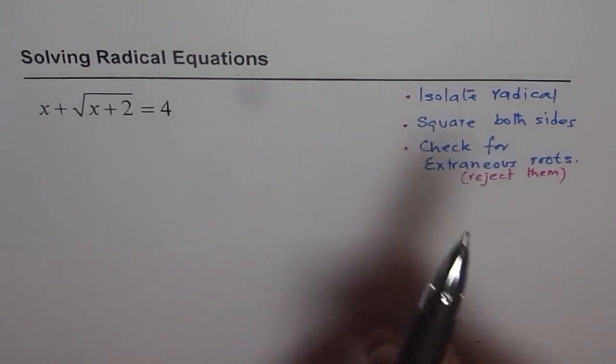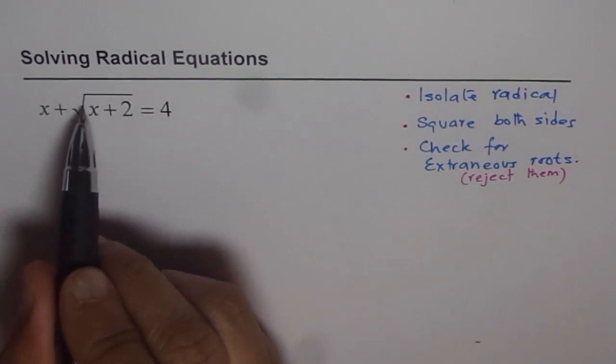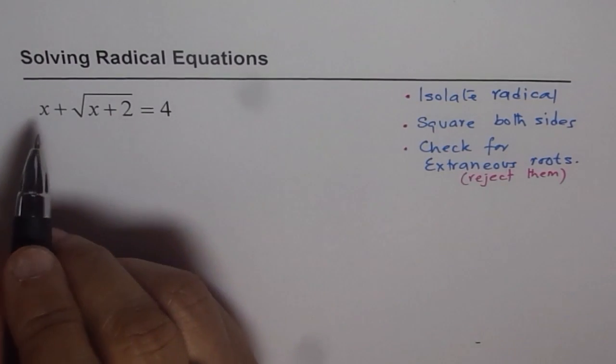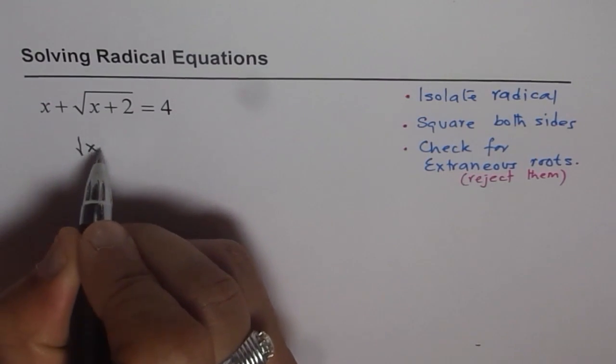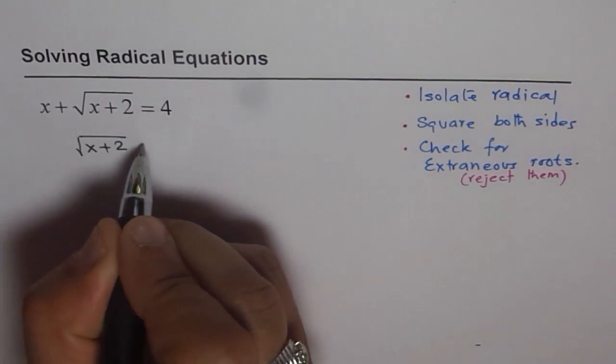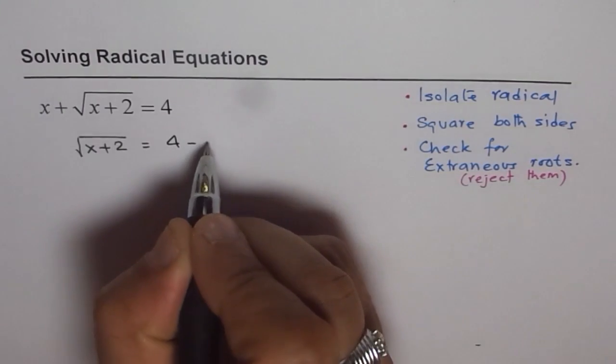So, first part is isolate radical. Radical part is square root of x plus 2. So, we'll take away x from both sides. And so, we get square root of x plus 2 is equals to 4 minus x.